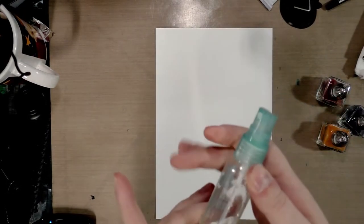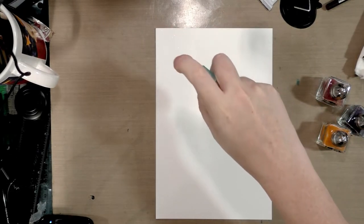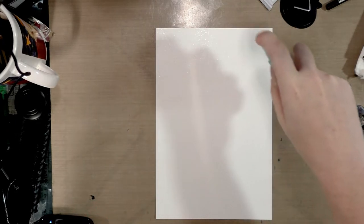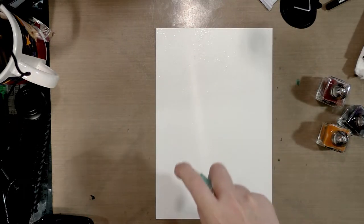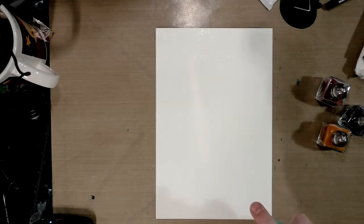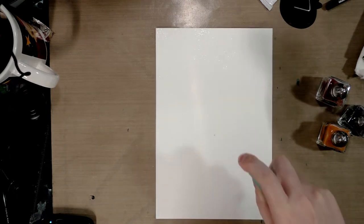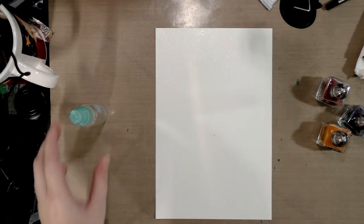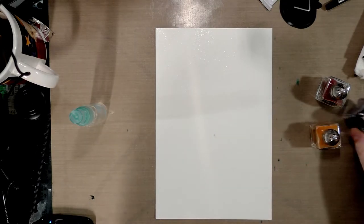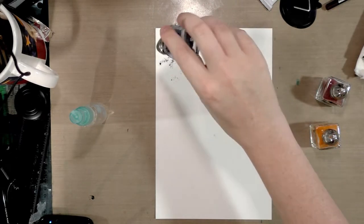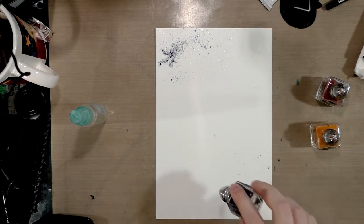We're going to start by spritzing the paper with some water. This will take a while to dry because Yupo is non-absorbent, so the water has to evaporate from the surface. This might not even work—like I said, we're just experimenting today.